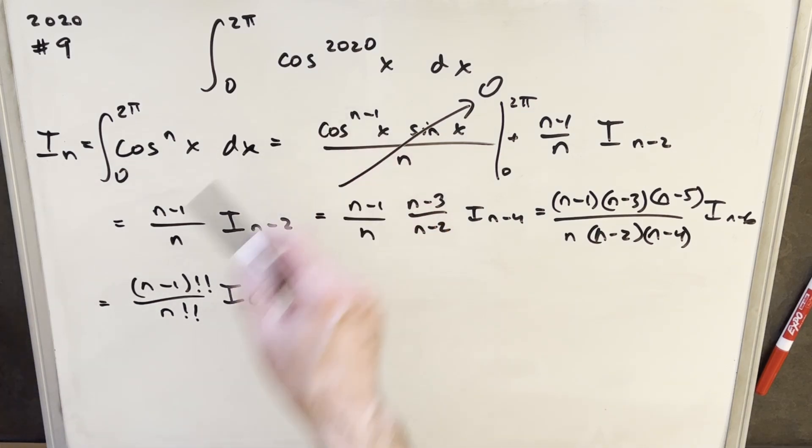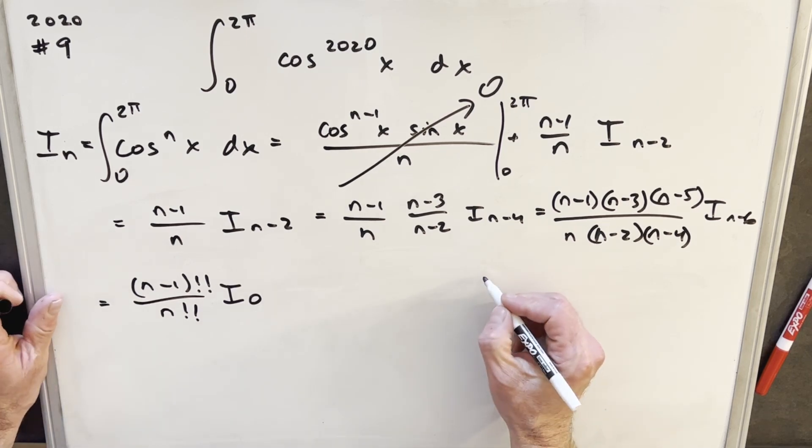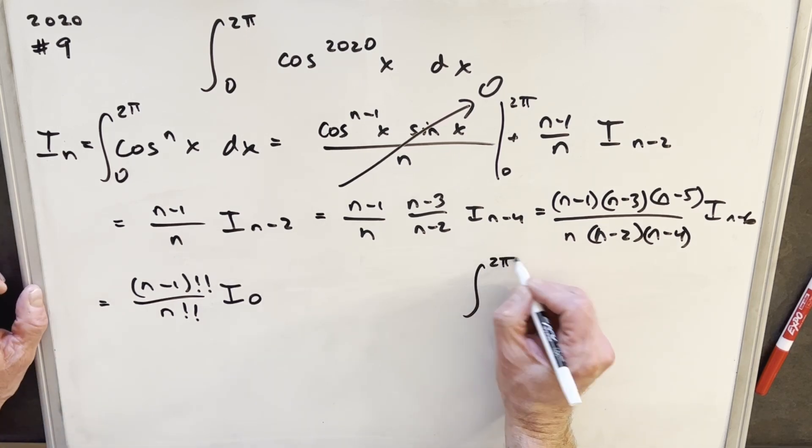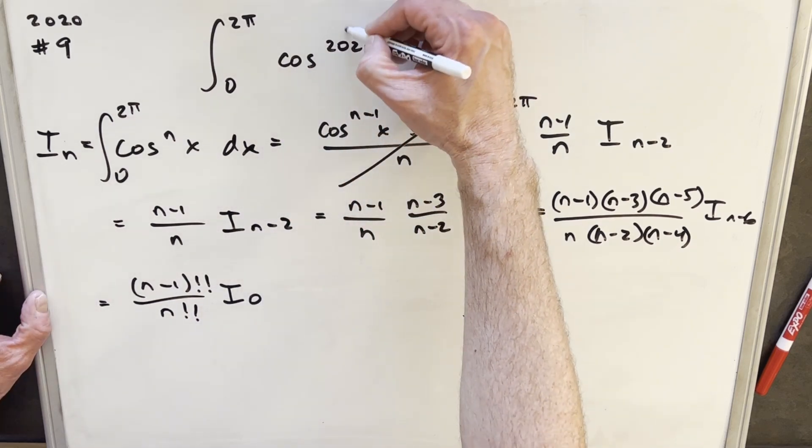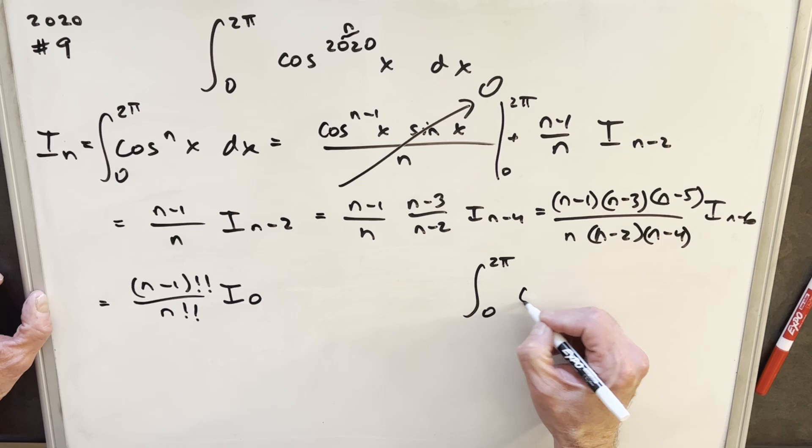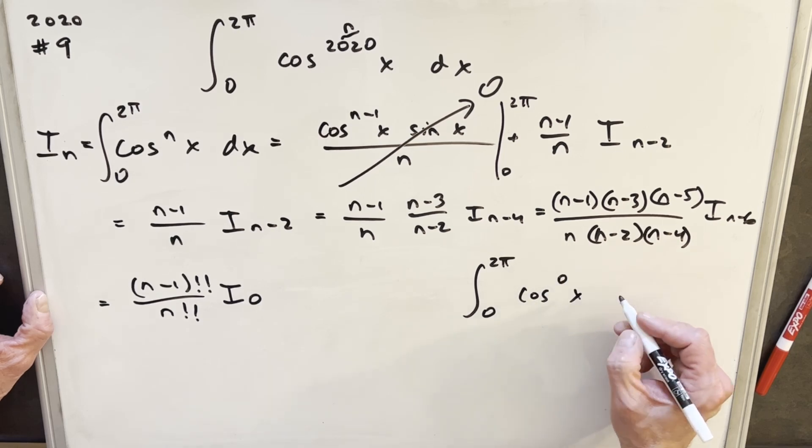So with this, we're actually pretty close to having a formula for everything we need to do with this integral. But what's this i sub 0 going to be? Well, this is actually really easy to find, because we can just do the integral. Okay, we'll just look at 0 to 2 pi, cosine, so this is our n right here. So cosine of 0 dx, but that's just 1.